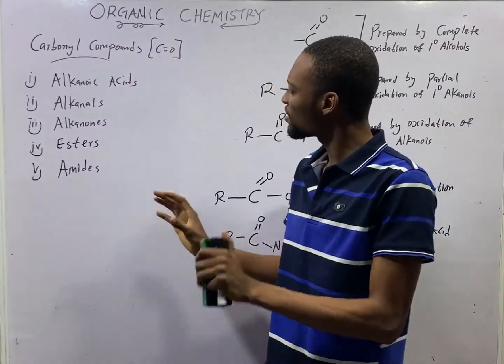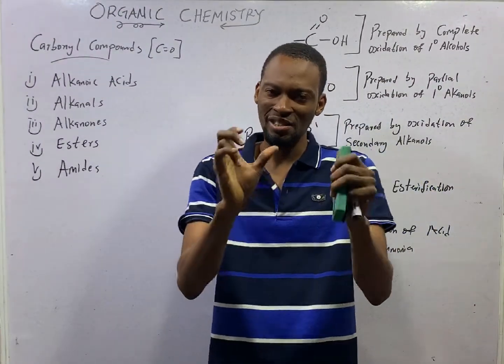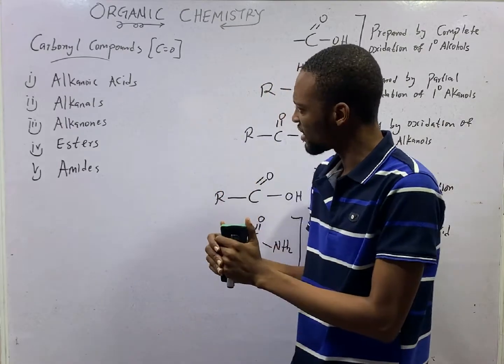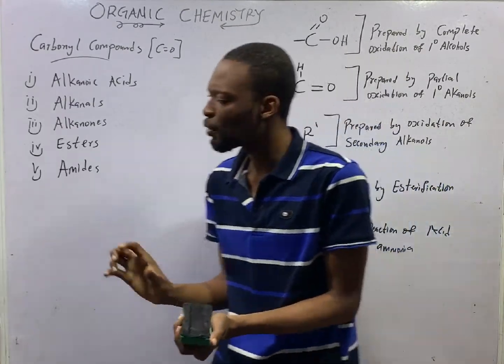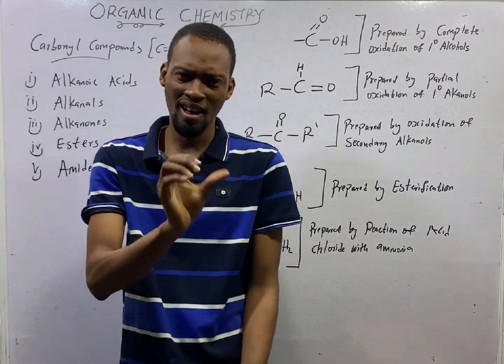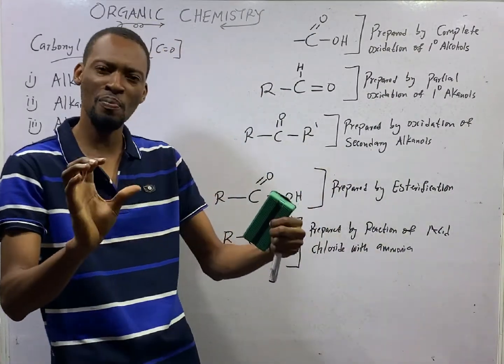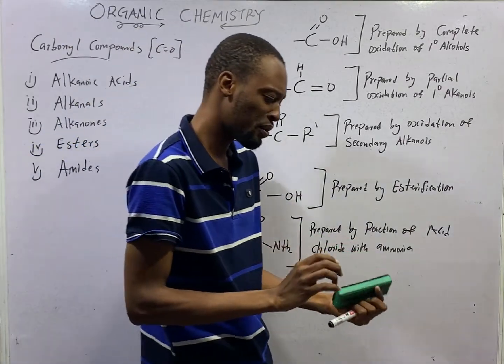This is episode number 103 of the 120 Days to JAMB Chemistry with Flash Isaac. In this episode, we shall be looking at carbonyl compounds and their preparations.